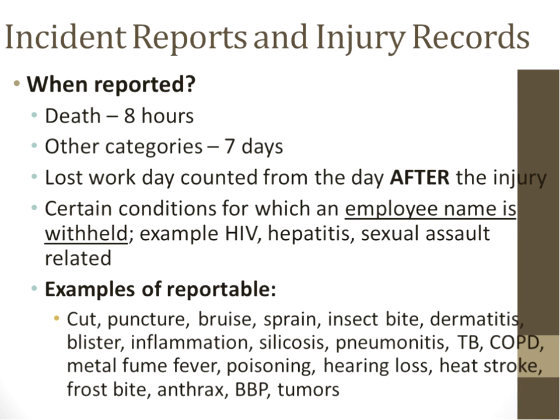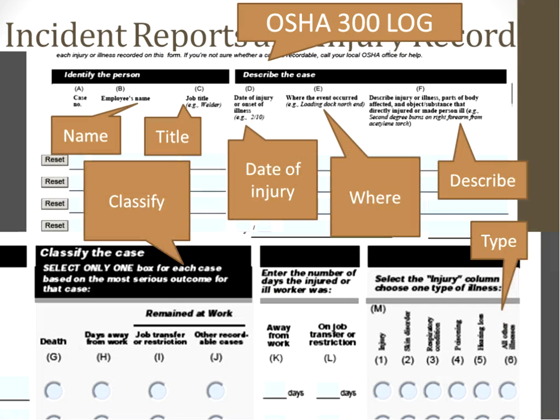Certain employee information is withheld for conditions like HIV, hepatitis, and sexually related diseases. Examples of reportable conditions include: cuts, punctures, bruises, sprains, insect bites, dermatitis, blisters, inflammation, silicosis, pneumoconiosis, tuberculosis, COPD, metal fume fever, poisoning, hearing loss, heat stroke, frostbite, anthrax exposure, exposure to bloodborne pathogens, and tumors.